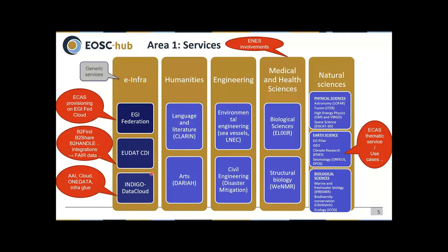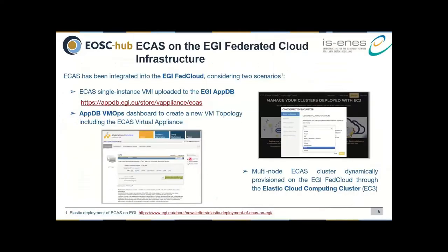We are also engaged in the infrastructure layer because it's very important how these infrastructures come together in the future. As a first example of this infrastructure integration: one important player in the European Open Science Cloud is the EGI federation, a compute-centered federation originating mainly from the high energy physics community. They provide an EGI FedCloud environment, and within this the ECAS service is also available as a virtual appliance — installed and startable based on container technology — and it's part of this EGI FedCloud infrastructure.